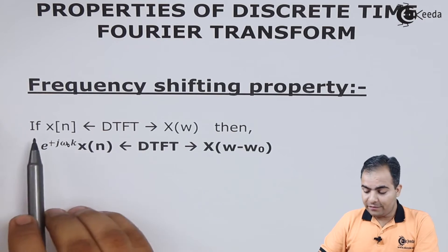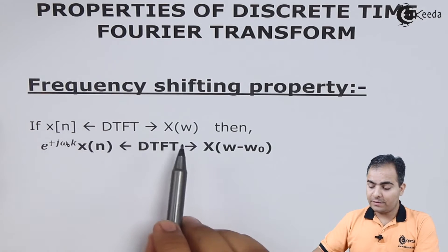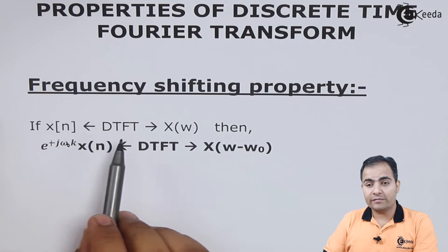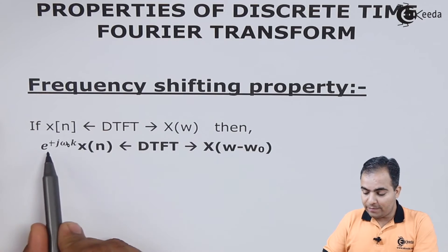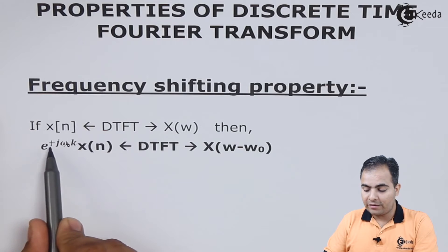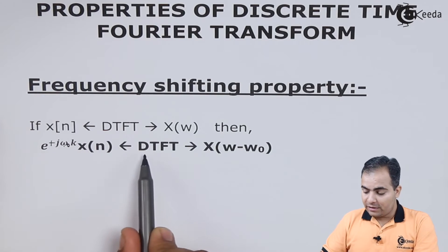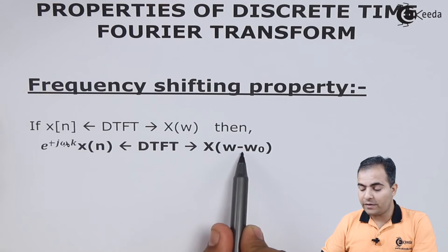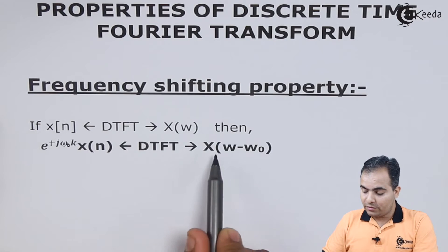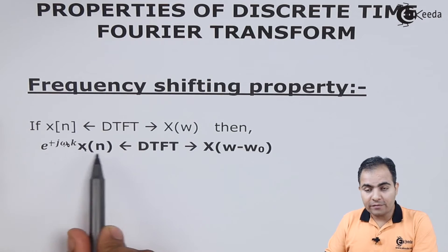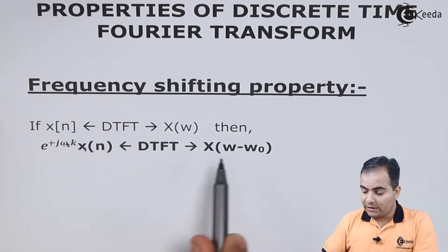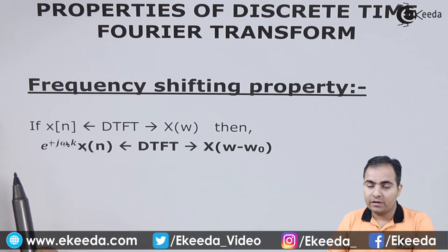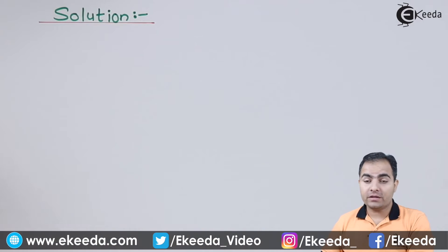So first of all the statement: if x of n has discrete time Fourier transform X of omega — meaning we can write the DTFT of x of n as X of omega — then e to the power j omega naught n times x of n has DTFT equal to X of omega minus omega naught. So X of omega is the DTFT of x of n, but this omega is now shifted by omega naught. We'll prove this whole statement.